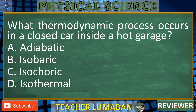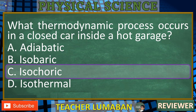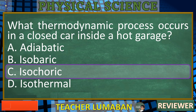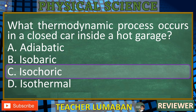In a closed car inside a hot garage, the process that occurs is primarily an isochoric process. An isochoric process is one where the volume remains constant. The volume of the air inside the car does not change because the car windows and doors are closed, meaning the air is trapped and cannot expand or contract freely. While the temperature inside the car rises due to the heat from the garage, increasing the internal energy and pressure, the volume remains constant. This defines an isochoric process, where any change in temperature leads to a change in pressure but not in volume.